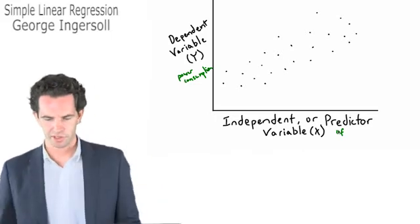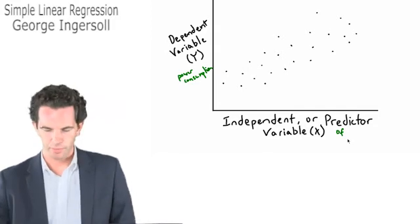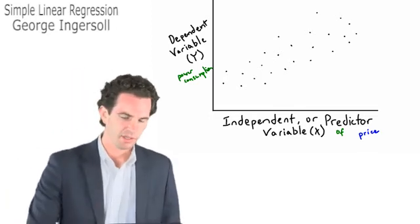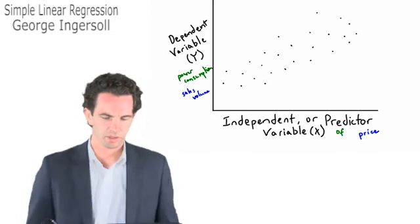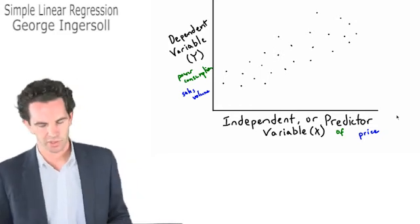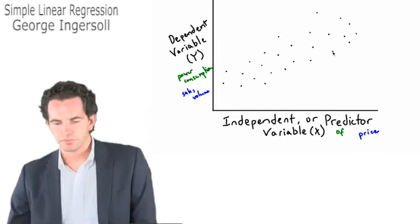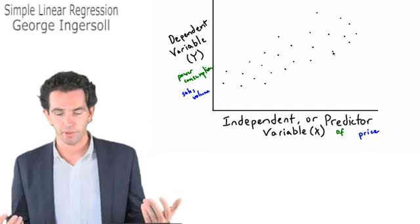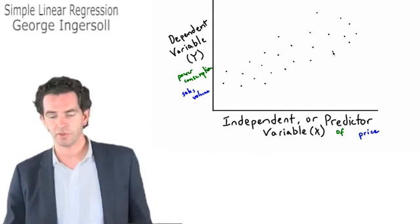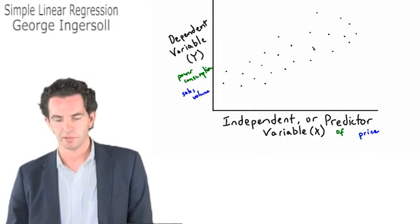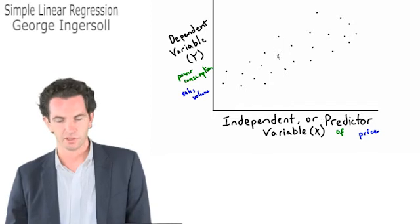We might have the price of a product as the independent variable and sales volume as the dependent variable. Each one of these points represents a combination — a value we've measured in the past, because that's what we have to use to build a regression. We have to use collected data. Each dot would represent something like a day where we measured the Fahrenheit and the city's power consumption, or a price and sales volume that we've measured in the past. Each little dot represents both an x and a y value.